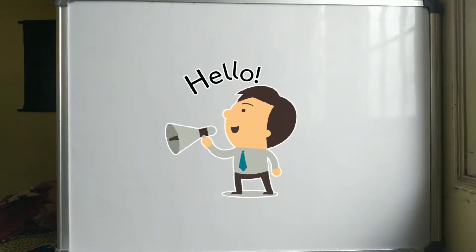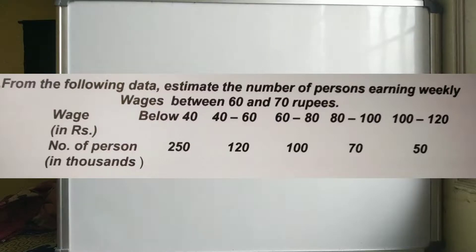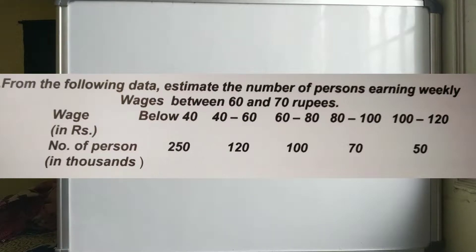In this video we are going to solve a different type of question based on Newton's forward interpolation formula. The question says: from the following data, estimate the number of persons earning weekly wages between 60 and 70 rupees. We take wage as x and number of persons as y.